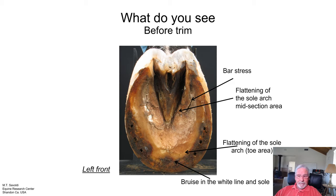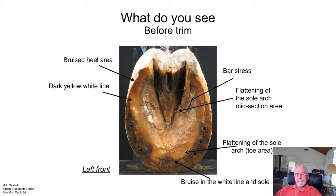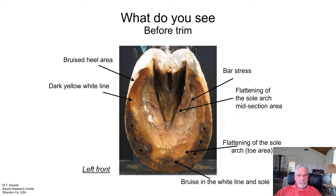Bruising in the heel area. You see the darker color of the white line — it's getting darker yellow. That means stress. Dark yellow to the white line tells us the distal border, the sensitive lamina, is being under stress. So it'll darken up the white line.